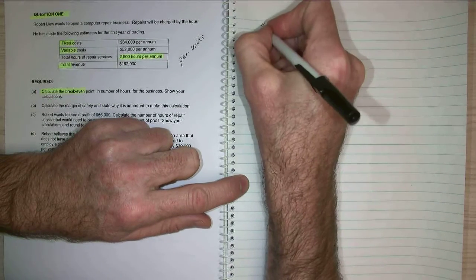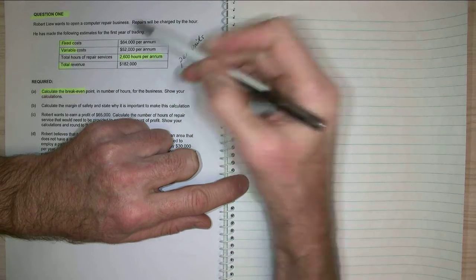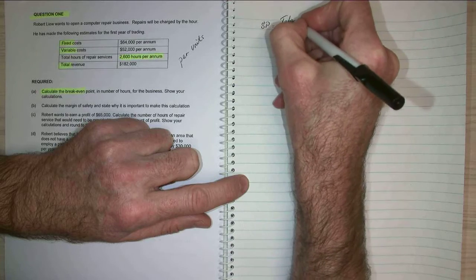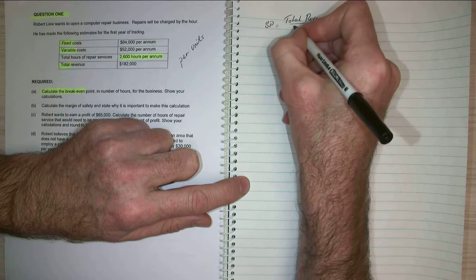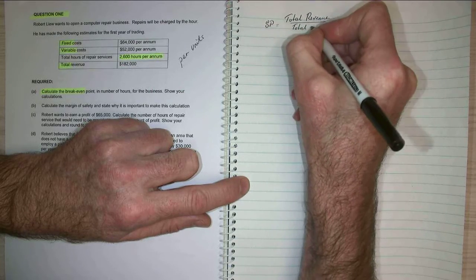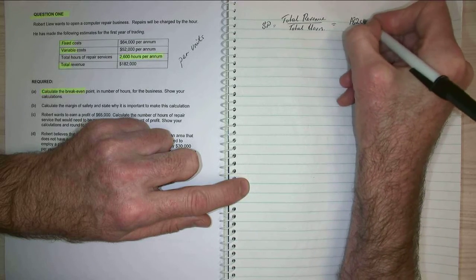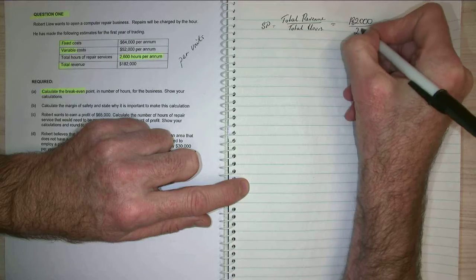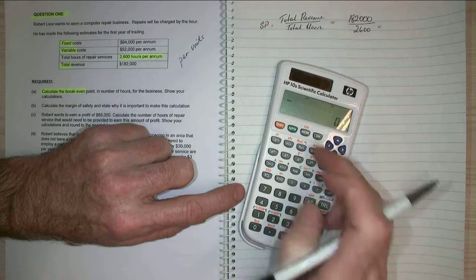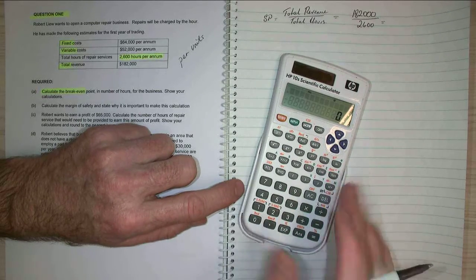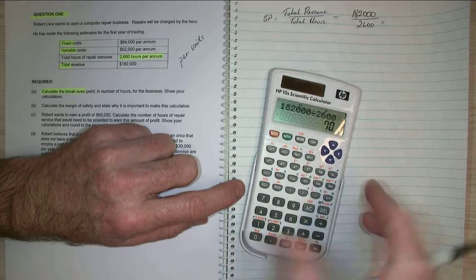First thing I need to do is my selling price. My selling price will be my total revenue divided by my hours of service. So my total revenue divided by total hours. And this equals 182,000 divided by 2,600. Use my calculator. 182,000 divided by 2,600 equals $70 per hour.